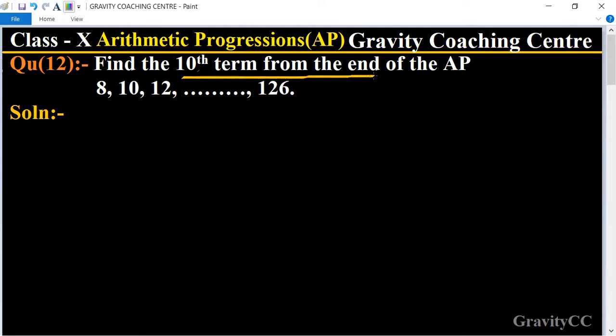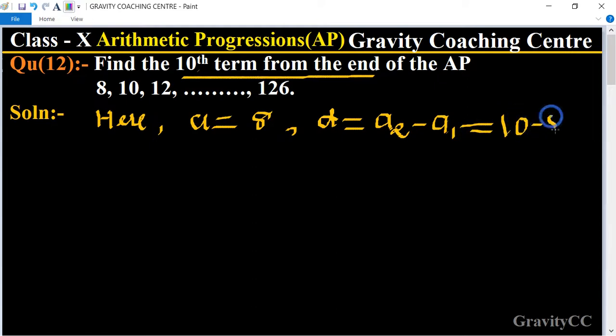From the end of the AP, so here a equals 8, and d equals second term minus first term, equal to 10 minus 8, equal to 2. Find the 10th term from the end, so its formula is...